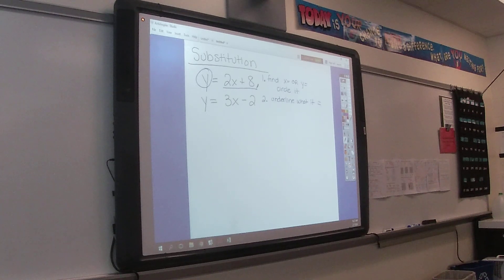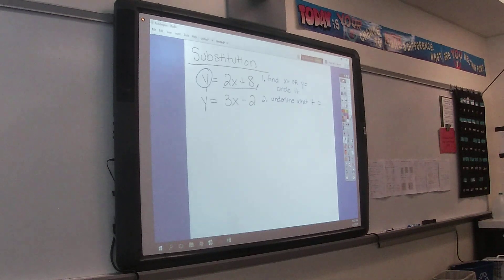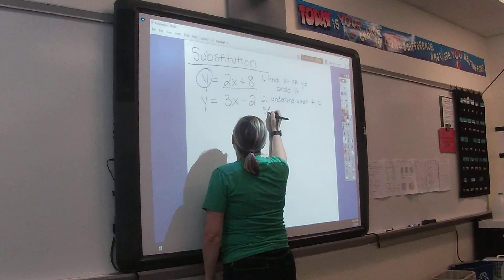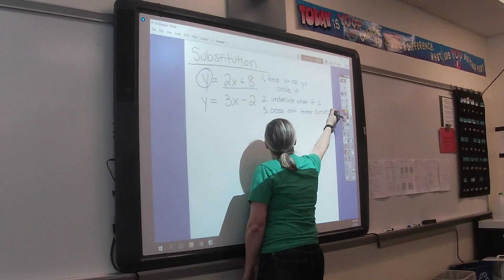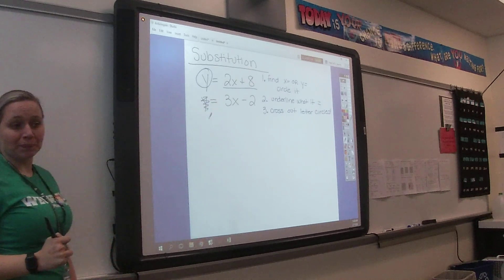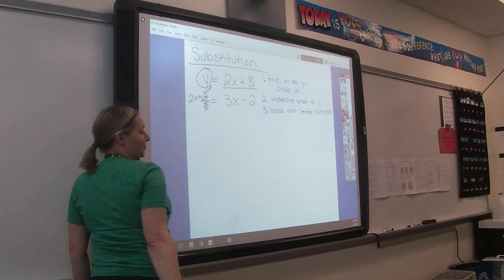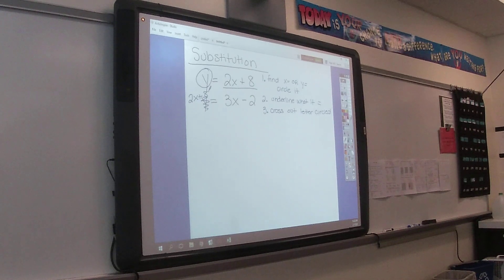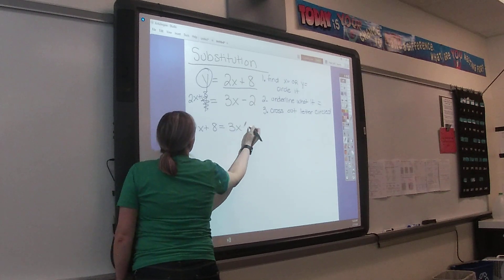And then we said we would underline what it equals. So then wouldn't it be 2X plus 8 equals 3X subtract 2? Right, so then we'll go to the other equation, and we would cross out the letter that we circled. Because we circled the Y, we would cross out the Y. And in its place, we would put the 2X plus 8.